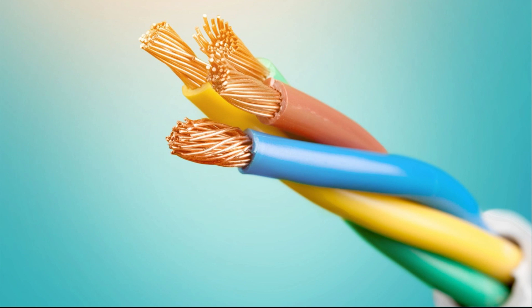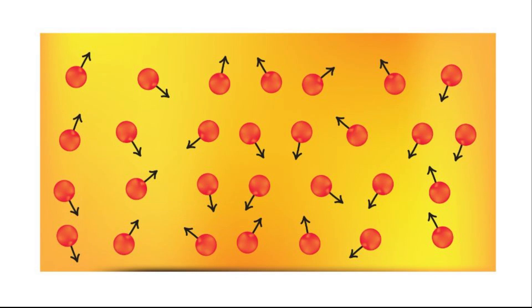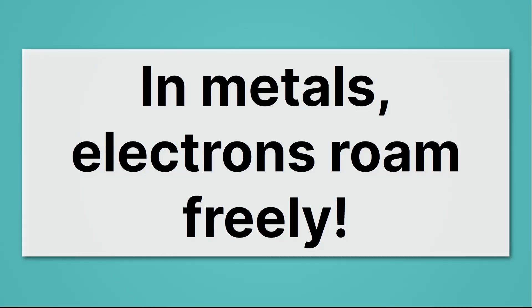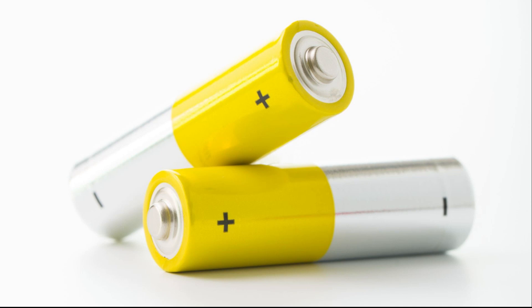Wires are everywhere all around us — coils of metal surrounded by plastic. What we want to focus on is what happens inside that metal. The inside of the metal looks a bit like this. These red dots represent electrons, and the arrows tell us the directions they're traveling. The electrons inside metal can go where they want; they roam around freely with no particular direction in mind. So in metals, electrons roam freely.